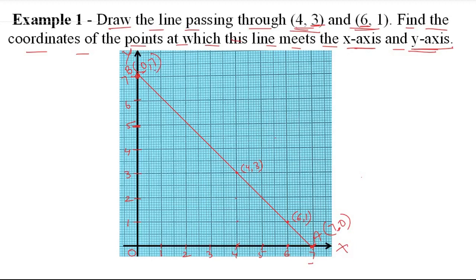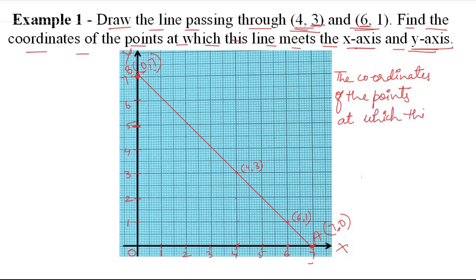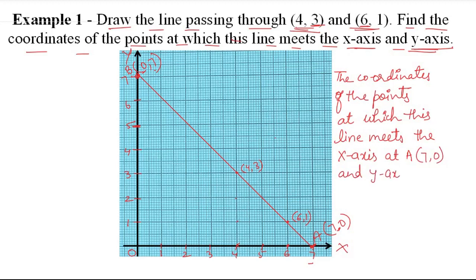We will write here on the side: the coordinates of the points at which this line meets the x-axis at A(7,0), and the y-axis at B(0,7). This tells us where the line meets the y-axis and where it meets the x-axis.